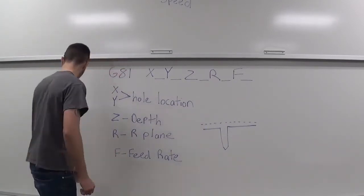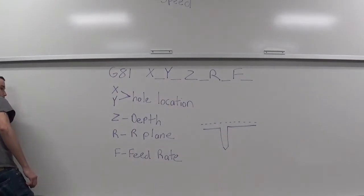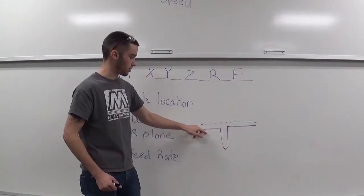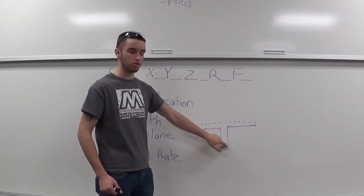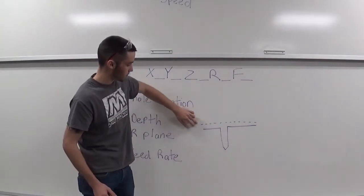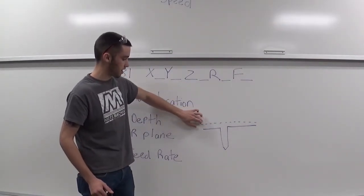For a quick lesson on the R-plane here, we're going to act like this bottom line here, that's the material. This right here is the hole that we are drilling. When you call up a G81, you have an R-plane, and the R-plane is represented with this dotted line.